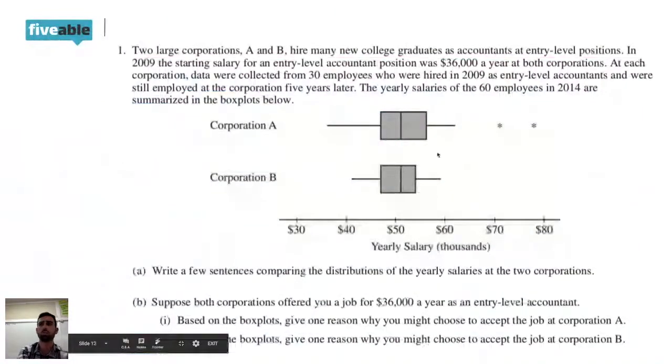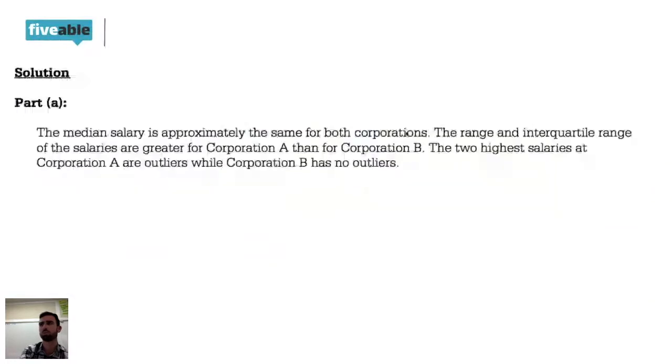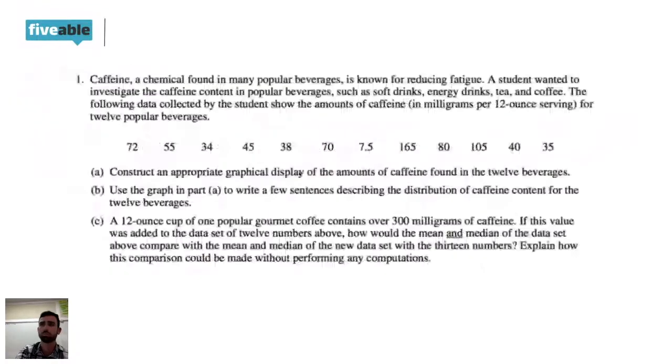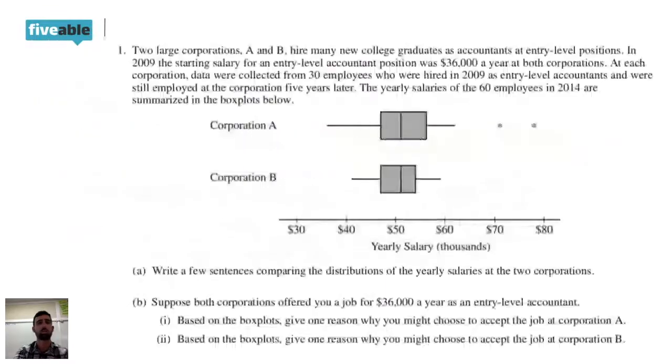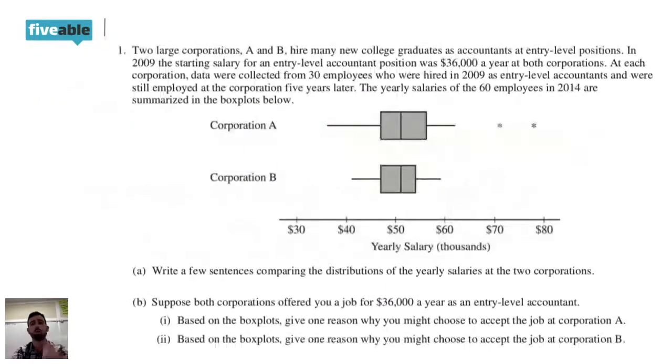So Corporation B, there's nothing really unusual about it. And we'll see in our solution that it says the two highest salaries of A are outliers, but B doesn't have any outliers. So it's just saying there's nothing unusual about B, but there is something unusual about A. So we don't always have to talk about it if it doesn't exist.